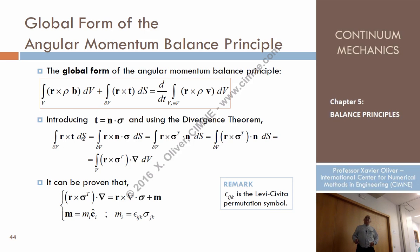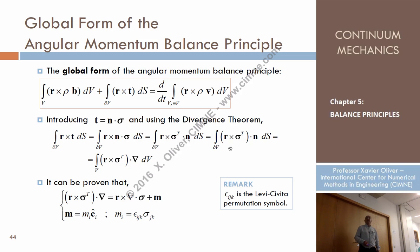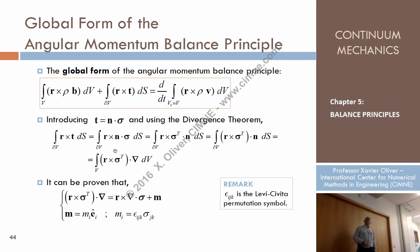I take the traction term and apply T = n · σ, which we know from chapter 4. Some mathematical operations by indices show this equals R σ^T · n. This is a vector, and now I can apply the divergence theorem: an integral over the surface of something times n is replaced by the divergence of that something integrated over the volume. I change n to ∇ (nabla), keep the dot product, and change the surface integral to a domain integral. So I've transformed the boundary integral into a volume integral.